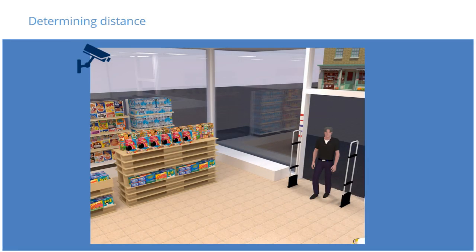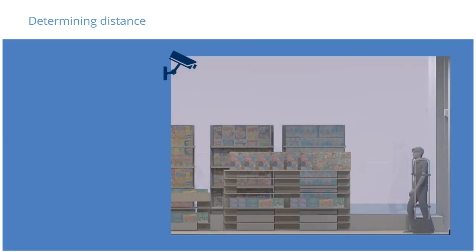Another variable to consider is the distance from the camera to the subject. As you can see from the example here, the distance from the camera to the subject is not the same as the distance from the subject to a spot below where the camera is mounted. For that reason, you must also account for the height of the camera to determine the true distance from the camera to the subject.